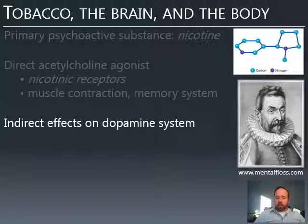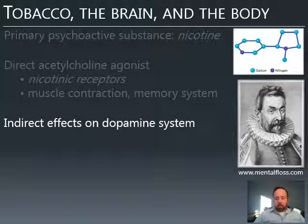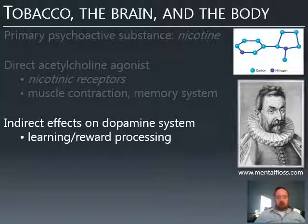Nicotine also has an indirect effect on the dopamine system. It takes a couple of steps, but dopamine is released in greater quantities when nicotine is present. It's thought that dopamine is the reason why nicotine is as reinforcing as it is. We don't want to make the simplification that dopamine equals reward, but dopamine is involved in reward processing and in learning — and those two processes are linked. So nicotine affects the dopamine system, and that's why it's thought nicotine can be so easily addictive.